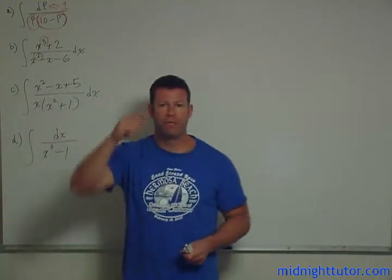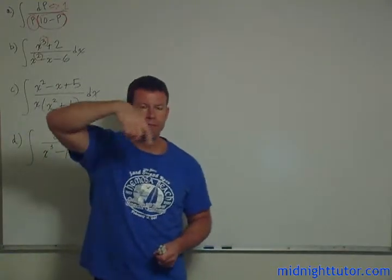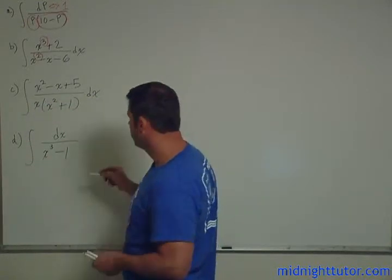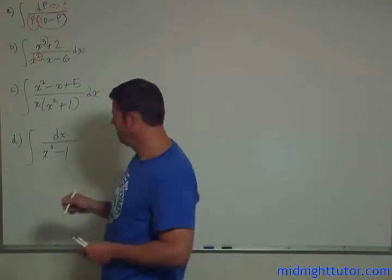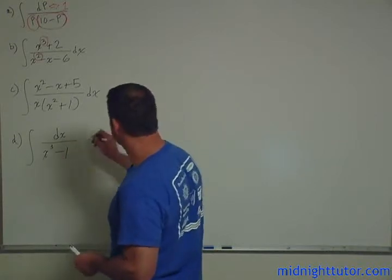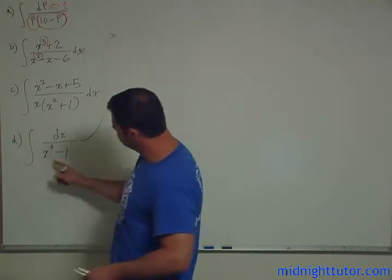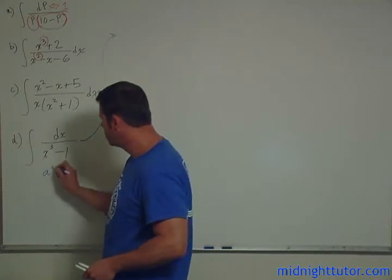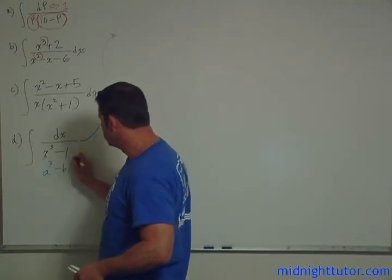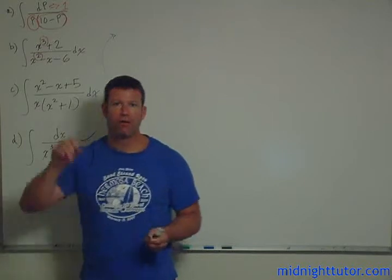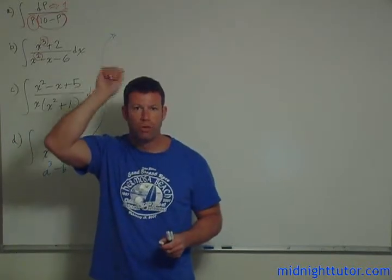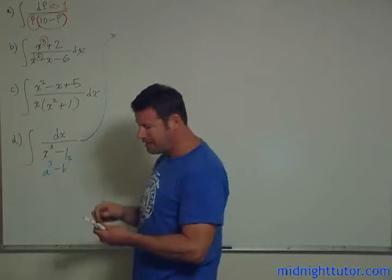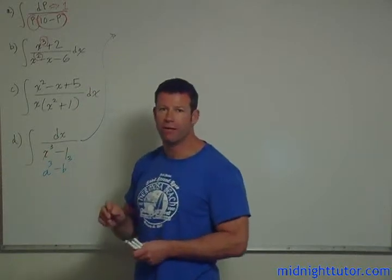We're down to part D already - the miscellaneous part: dx over x cubed minus 1. As soon as you see this, a cubed minus b cubed, the beacon should be going off because what do we do with this? We factor. It's a standard factoring formula - it's one of those things that you have to memorize.